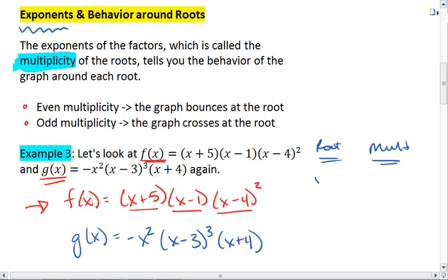For g(x), for the root x equals 0, we have a multiplicity of 2, which is even. At x equals negative 4, we have a multiplicity of 1, which is odd. And at x equals positive 3, we have a multiplicity of 3, which is also odd.